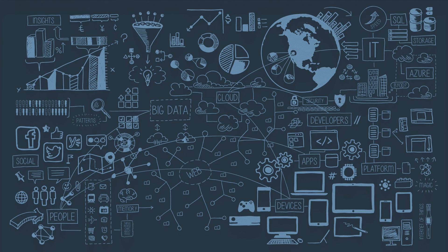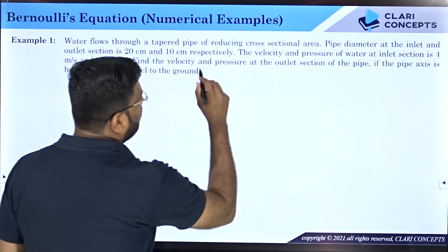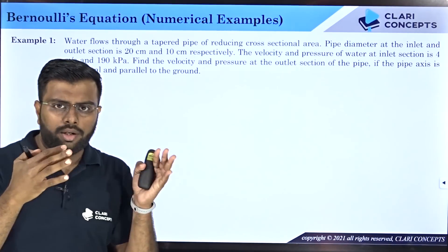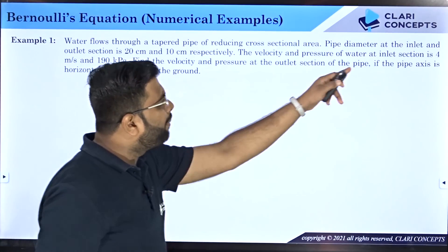First example: Water flows through a tapered pipe of reducing cross-sectional area. I have been given a tapered pipe of reducing cross-sectional area and water is flowing through that pipe. Diameter at inlet and outlet section is 20 centimeters and 10 centimeters respectively.